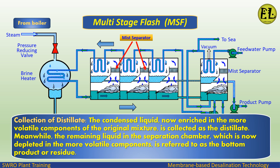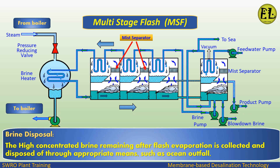Meanwhile, the remaining liquid in the separation chamber, which is now depleted in the more volatile components, is referred to as the bottom product or residue. The highly concentrated brine remaining after flash evaporation is collected and disposed of through appropriate means, such as ocean outfall.